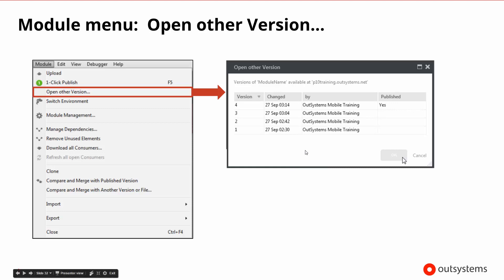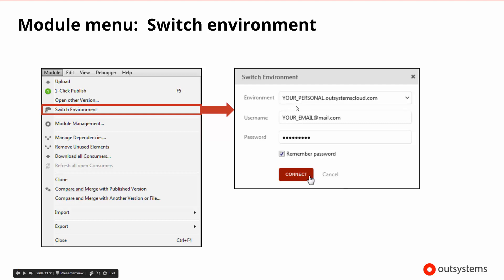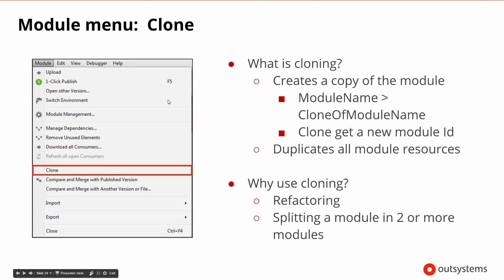One of those things is looking at all of the versions available while you're in Service Studio. We can open this immediately and see when things were published and who was the last person to work on them. We can also switch environments — if we're connected to one particular environment and server, we may wish to connect to a different one to compare things. We can have two Service Studios open at the same time or switch this one to another environment. We can also clone things from the module menu, which basically duplicates and creates a copy of those modules and their resources — useful for refactoring or splitting up code.